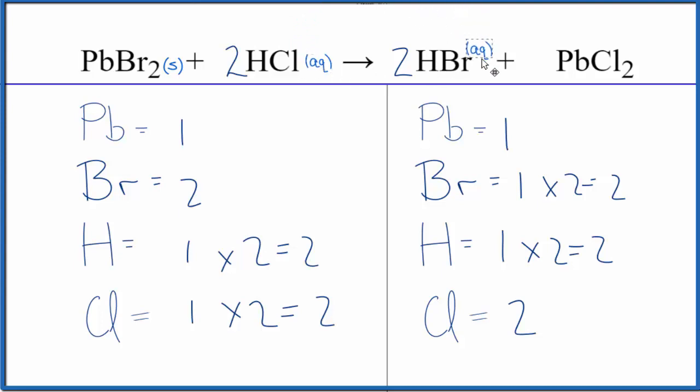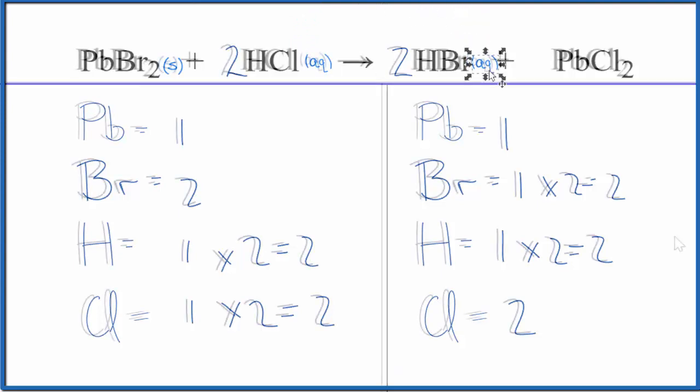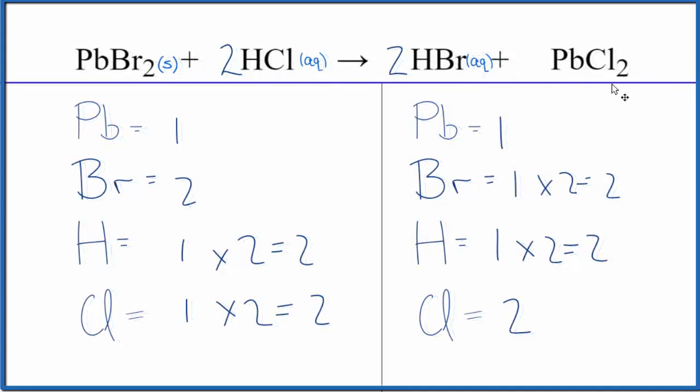Hydrobromic acid is also considered a strong acid, so that's aqueous. And then for PbCl2, this is another one that's slightly soluble. Some of it will dissolve, but most of it's going to fall to the bottom of the test tube, so let's call this a solid.